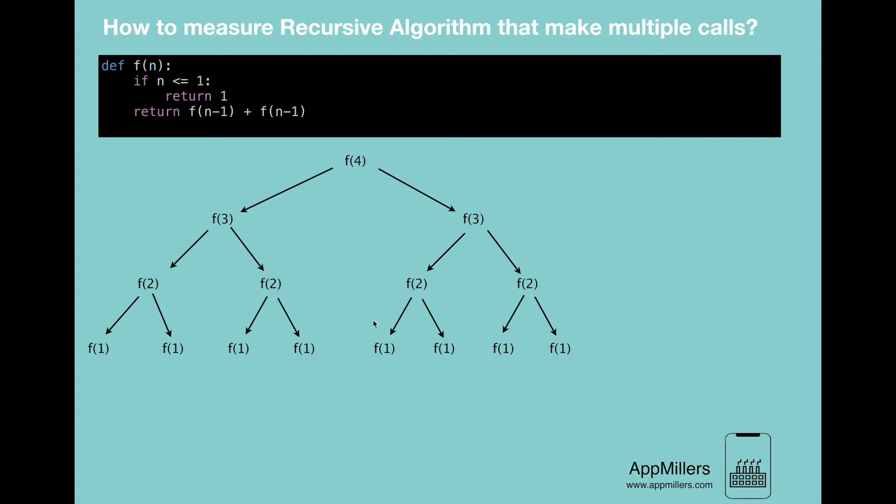So what does this number tell us? If you look at this tree, we see that the depth of the tree is 4. This is the first level, then second, third, and fourth. Which means that for our function f(n), the depth will be n.